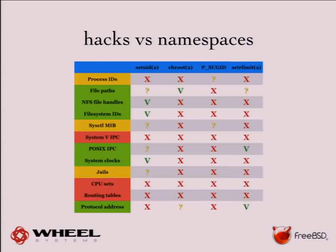POSIX IPC: there is some protection when you drop privileges, but the best protection is disallowing creation of new file descriptors. System clocks: you can read time but cannot modify system time if you are not root. For jails, you can still list available jails in the system but won't be able to attach to a jail if you are not root. CPU sets and routing tables are essentially unprotected — you can just change your routing table with no security checks.